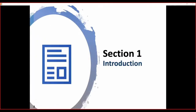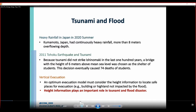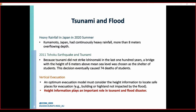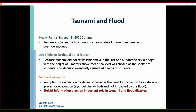In the first section, we introduce the background of this paper using two examples of tsunami and flood disasters. The first is the heavy rainfall in Japan in the summer of 2020. The second is the Tohoku earthquake and tsunami. Because a tsunami had not struck Ishinomaki in the last 100 years, a bridge with a height of 6 meters above mean sea level was chosen as a shelter for students, and this decision eventually caused 74 student deaths. From these examples, we find that height information plays an important role in tsunami and flood disasters, so an optimal evacuation model must consider height information to locate safe places for evacuation.